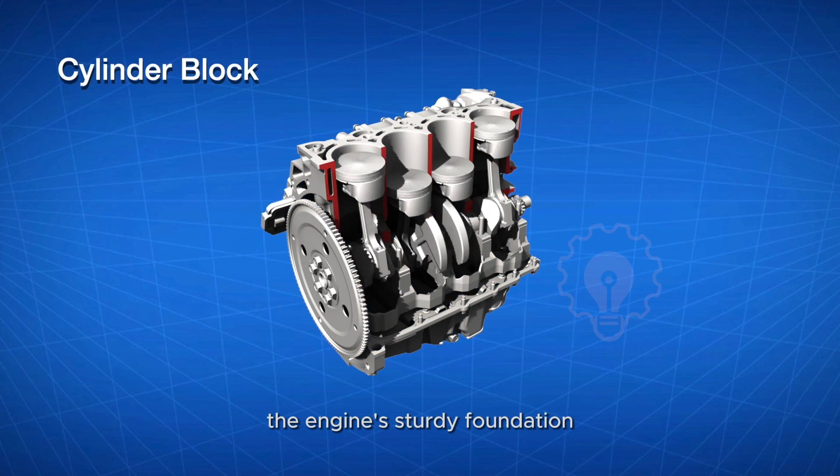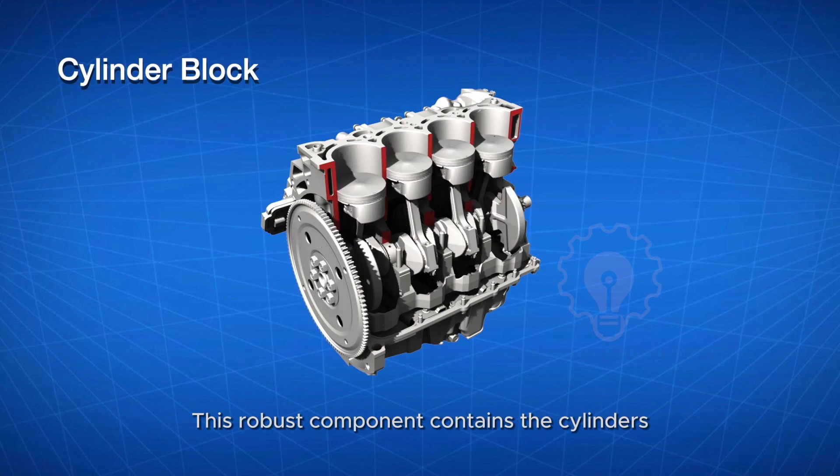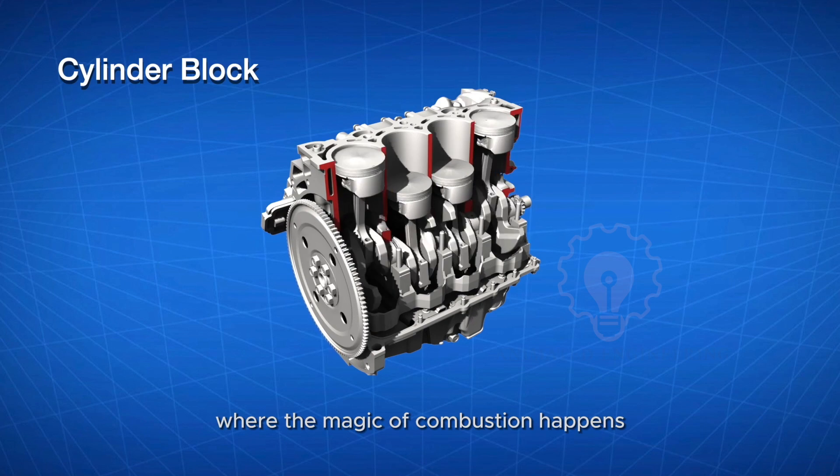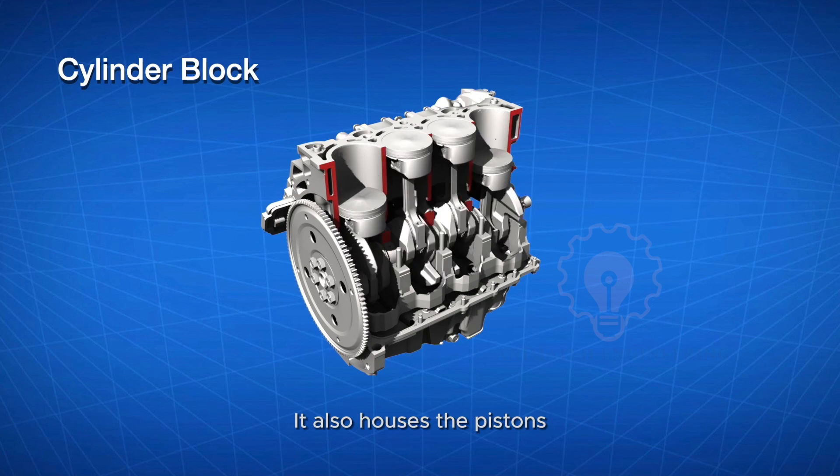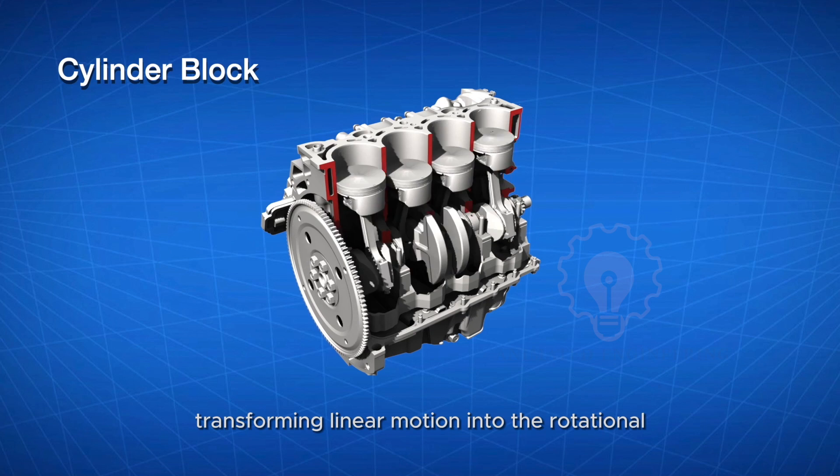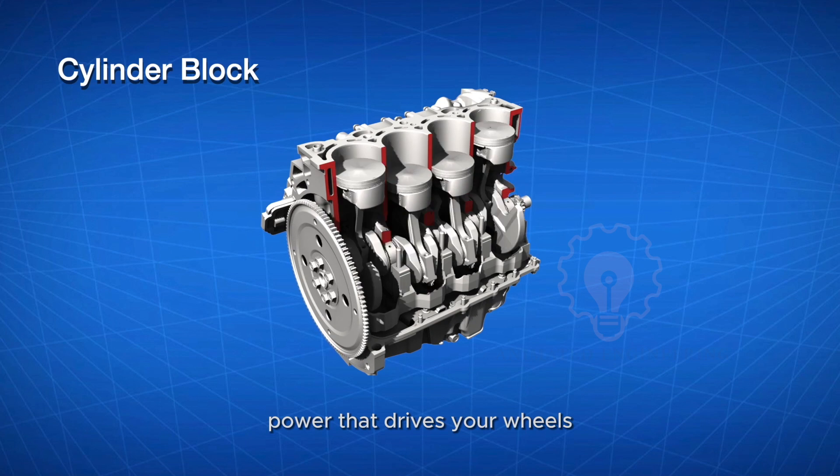Cylinder block: the engine's sturdy foundation. This robust component contains the cylinders, where the magic of combustion happens. It also houses the pistons, connecting rods, and the crankshaft, transforming linear motion into the rotational power that drives your wheels.